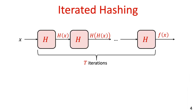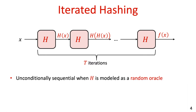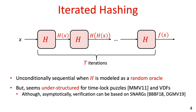Perhaps the simplest example of a delay function is the iterated hashing function. This function is obtained by iteratively applying a cryptographic hash function, such as SHA, onto the input. A main advantage of the iterated hashing function is that it enjoys a formal security argument in an idealized model. Concretely, its sequentiality can be proven unconditionally when the hash function is modeled as a random oracle. The downside of this delay function, however, is that it seems to be understructured to enable extensions to timelock puzzles or to VDFs. Asymptotically speaking, it has been suggested to use succinctly verifiable computation to enable fast verification, but at least at the moment, this approach doesn't seem to enable any concretely efficient instantiations.